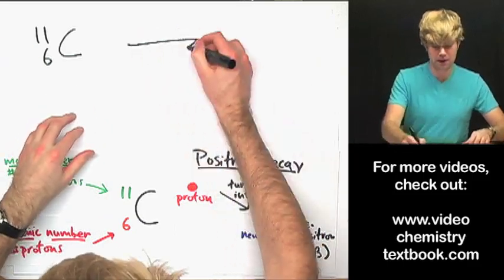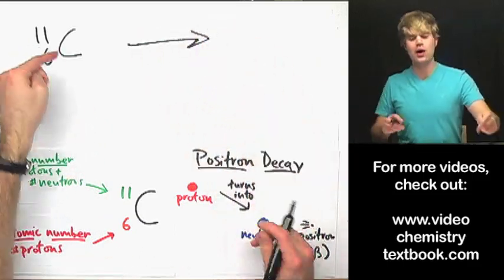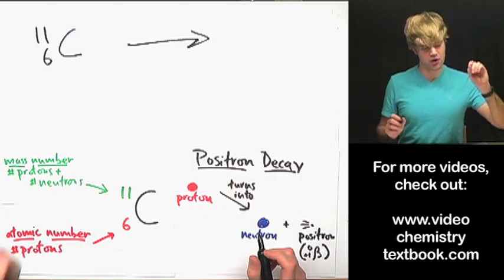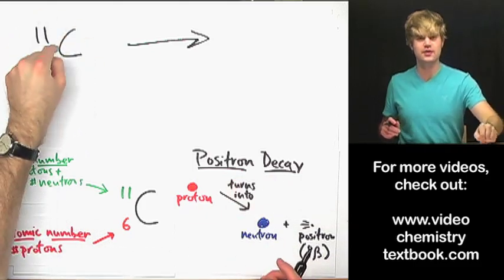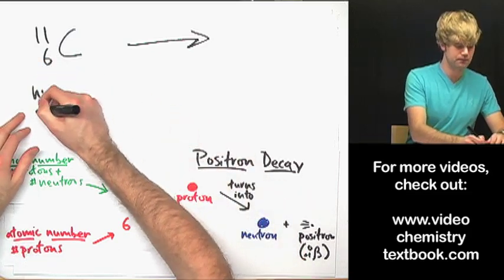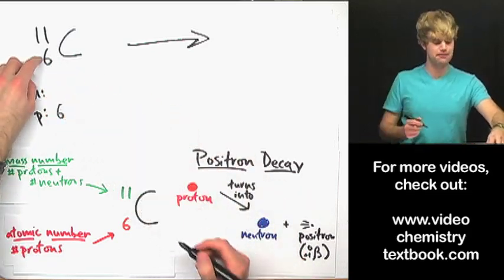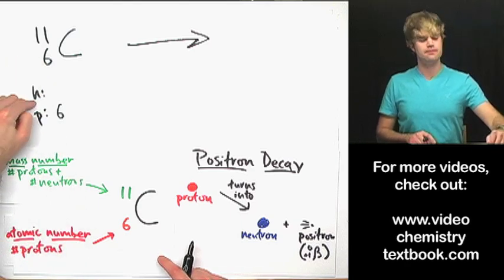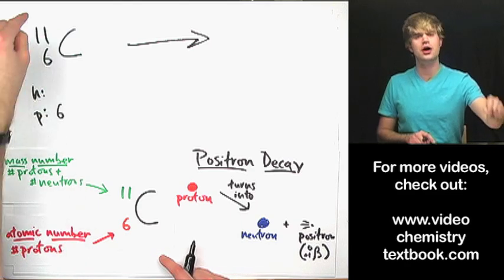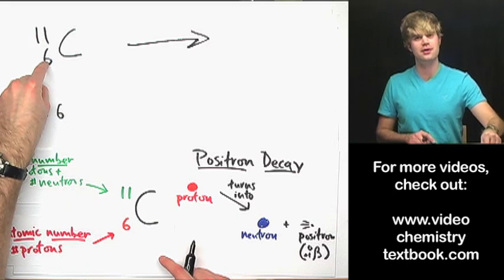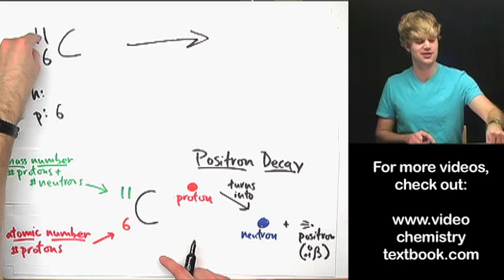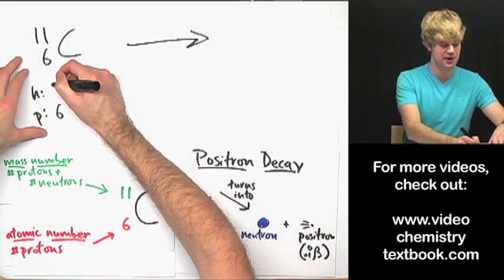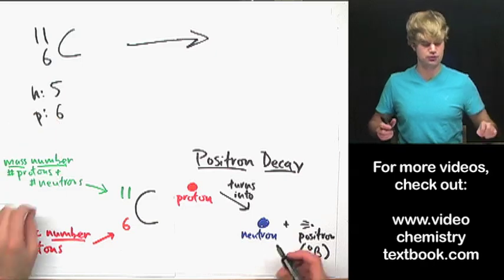So we start with carbon-11 and we want to know what happens to it after positron decay. I want to take a look at the number of neutrons and protons in this atom. Protons is easy — it's the atomic number, the number of protons in the nucleus. For neutrons, the mass number is the number of protons and neutrons, so I can subtract the atomic number from the mass number to give me the number of neutrons. So: five neutrons, six protons.